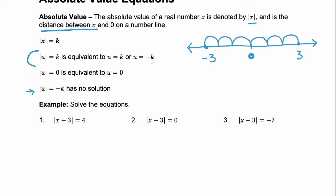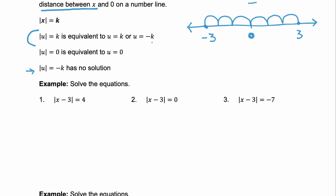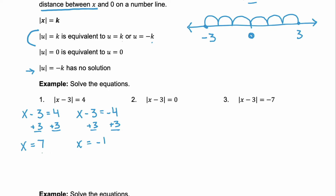So, let's look at three examples, and they all have the absolute value of x minus 3 equal to something different. The first one, it's equal to 4. So, to solve this, you're going to look at x minus 3 is equal to 4, and x minus 3 is equal to negative 4, because we want to consider traveling in either direction. And then we solve. The first solves to x equals 7, and the second x equals negative 1. So, the solution here is 7 or negative 1.